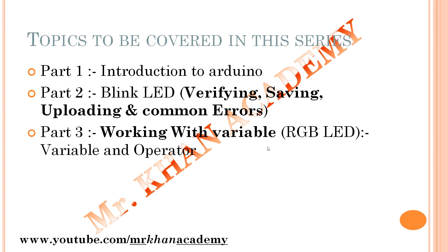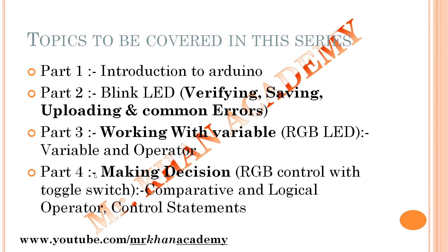In Part 3 we work with variables: different variable types, data types, and operators, with an RGB LED project — using single color and RGB to create red, green, and blue combinations. In Part 4, Making Decisions, we use RGB control with a toggle switch, learning comparative and logical operators — less than, greater than, equal to, AND, OR — and control statements like if/else.